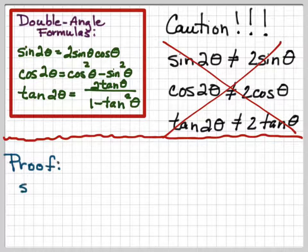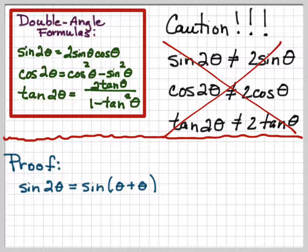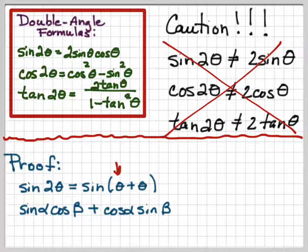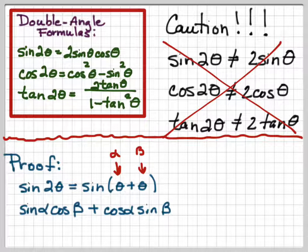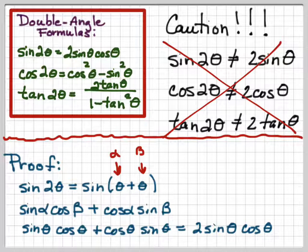Let's take a look at a quick proof. I want to prove that sine of 2θ equals 2 sine θ cosine θ. I'm going to change this to sine of (θ + θ), because θ + θ is 2θ. Then I'll apply the sum of sines identity: sine α cosine β plus cosine α sine β — which you've already memorized. With α = θ and β = θ, this becomes sine θ cosine θ plus cosine θ sine θ, which is two of the same thing — so that's 2 sine θ cosine θ.